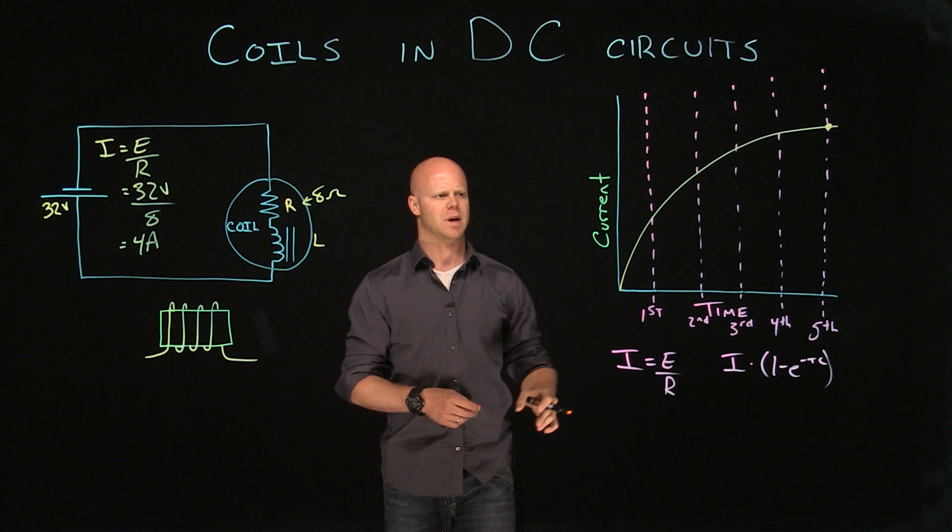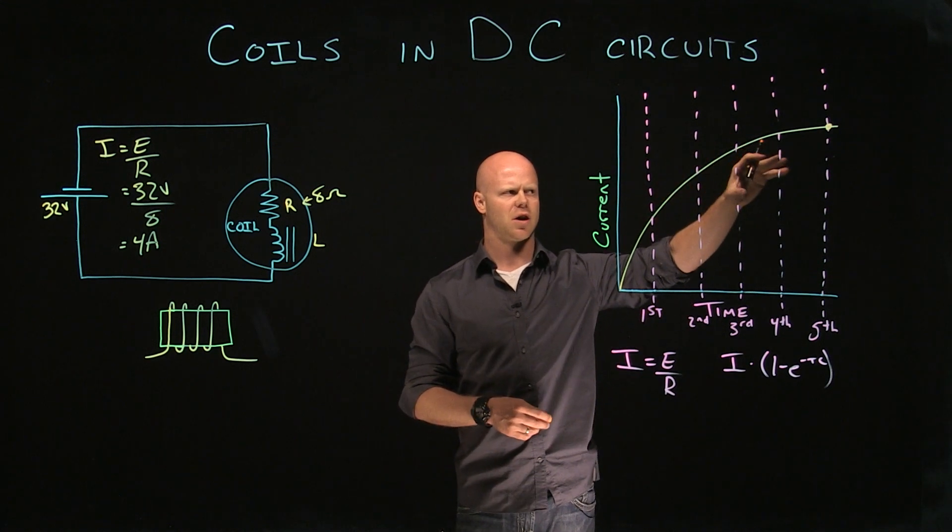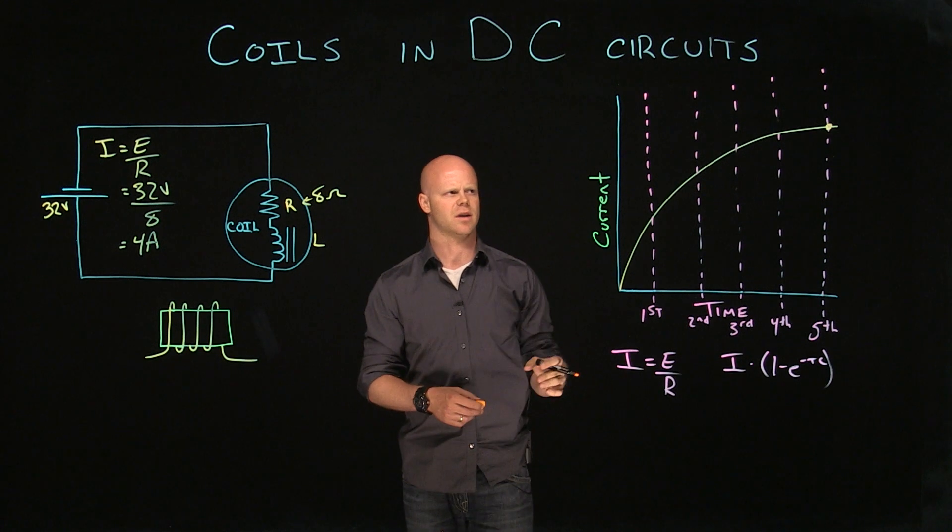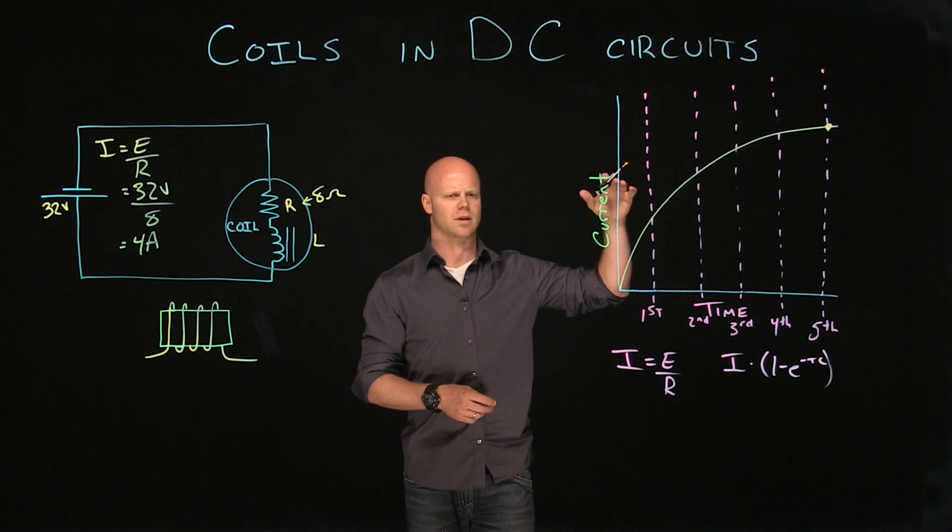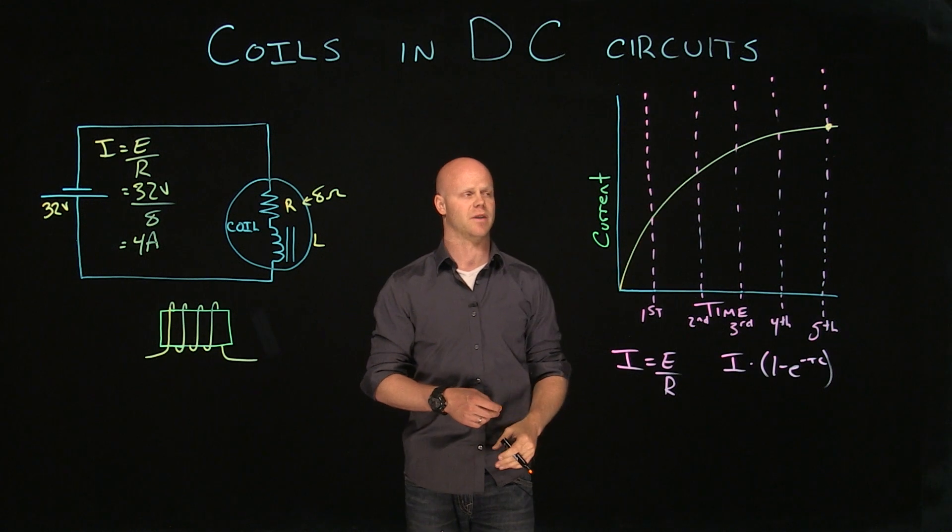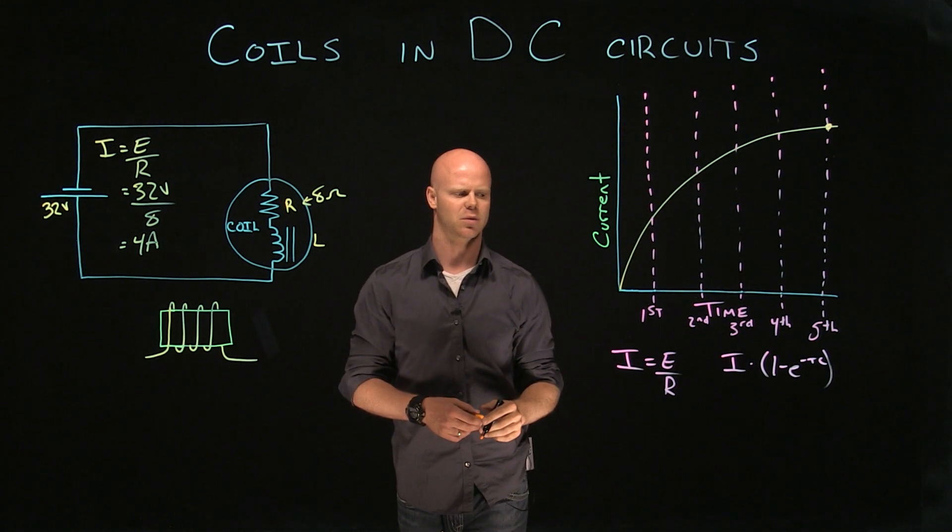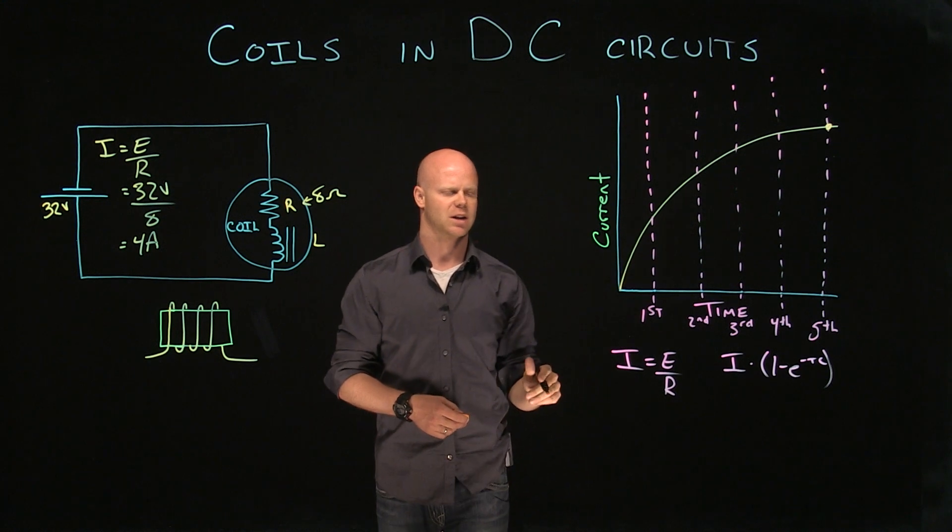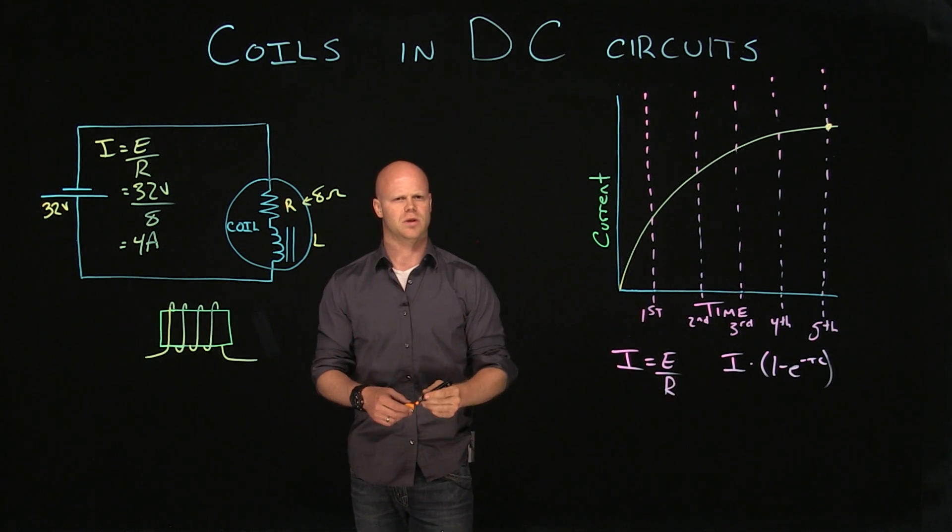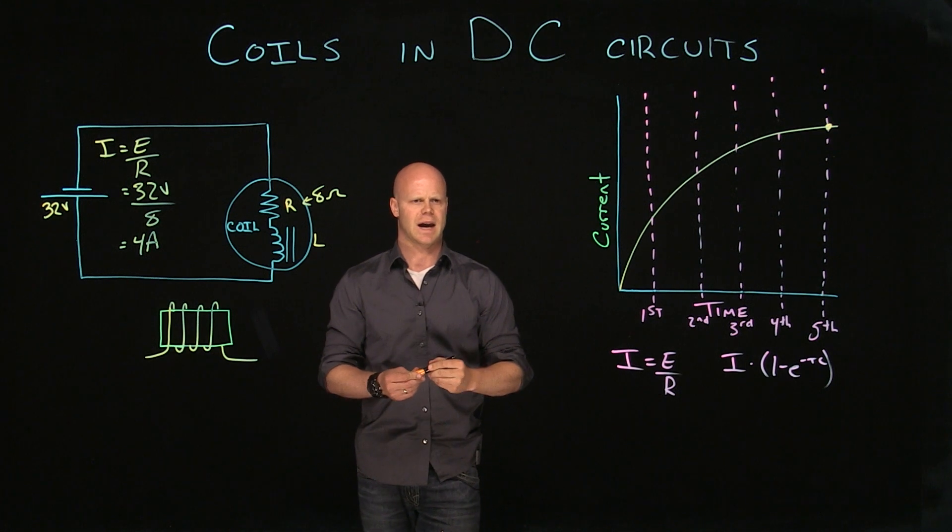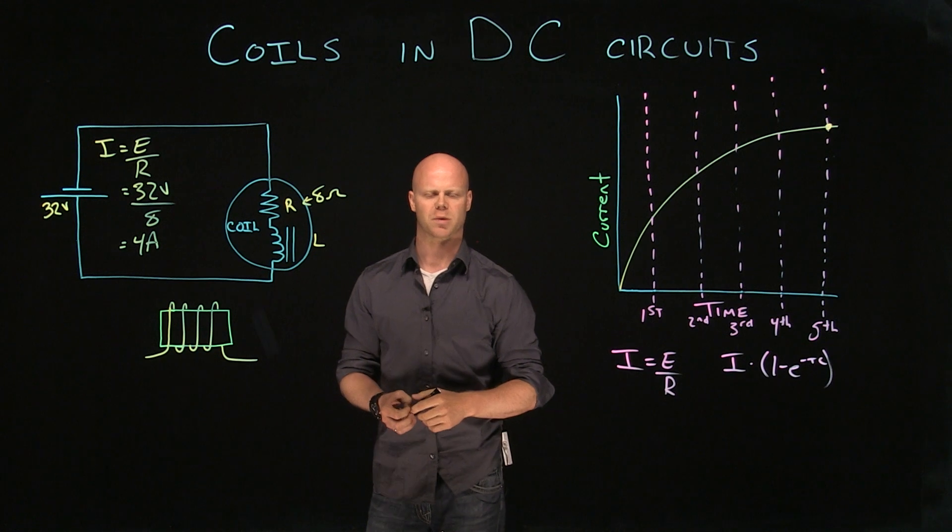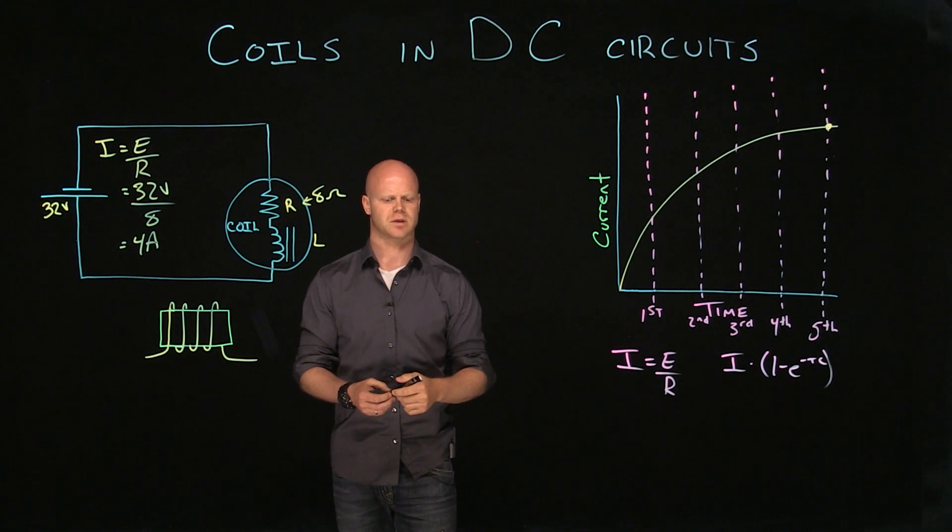What we have to remember is that this exponential curve is always a 63.2% increase. That's a theoretical value. Maybe if we went to the sixth or the seventh, it would appear that it would never reach that. It will reach that maximum value of current and stay at that maximum value based on its opposition. So quite often we'll use that fifth time constant as our 100% rather than it being 99.4% what that calculation would actually be.